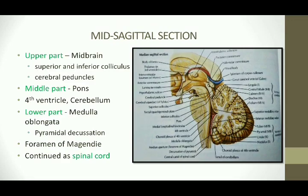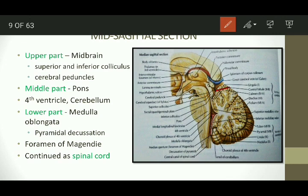As already explained, the corpora quadrigemina is present here, along with the pineal body, the cerebral peduncle of the midbrain, the pons, the fourth ventricle, and in the lower part the medulla oblongata with the pyramidal decussations. There is a structure called the foramen of Magendie or median aperture present here, which allows CSF to pass from the fourth ventricle into the subarachnoid space for drainage. On the posterior aspect of the medulla is the obex, which is where the central canal of the spinal cord begins.